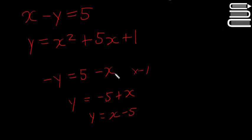So that's this just simplified in a different way. So now we can say x minus 5 is equal to x squared plus 5x plus 1. Because y is equal to x squared plus 5x plus 1, and y is equal to x minus 5, so we can let them equal to each other.